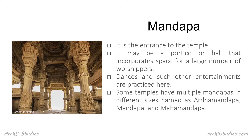The next term is Mandapa. It is the entrance to the temple and may be a portico or a hall that incorporates space for a large number of worshippers. Dances and other entertainments are practiced here. Some temples have multiple Mandapas in different sizes, named Ardhamandapa, Mandapa, and Mahamandapa. Ardhamandapa means half Mandapa, Mandapa is the simple Mandapa, and Mahamandapa means great Mandapa.